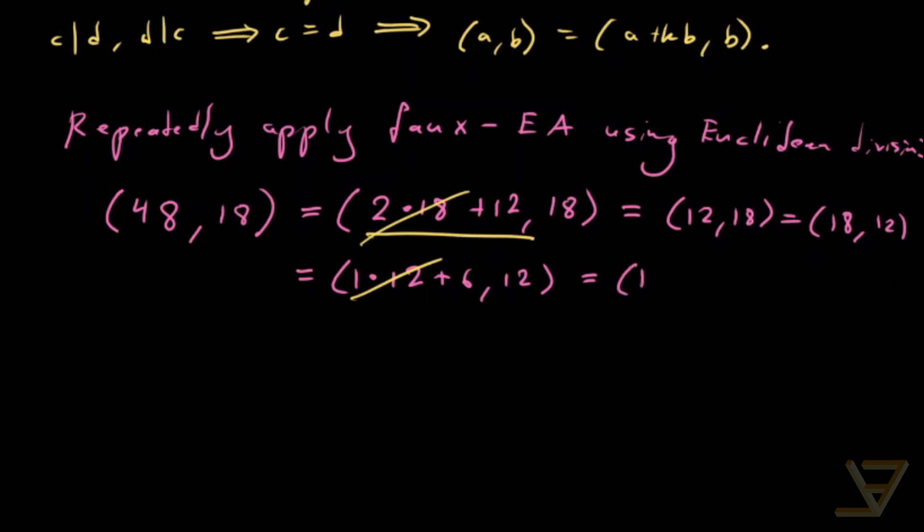So we get 6 and 12, and we find that this is 2 times 6, comma 6. And there's a remainder of 0 here.